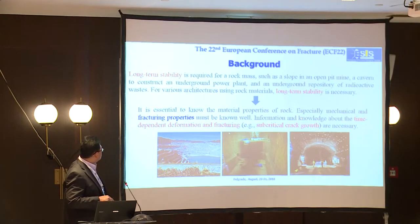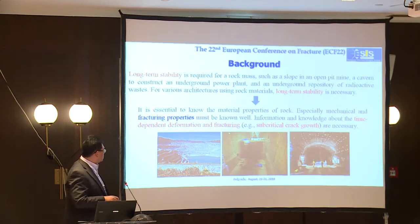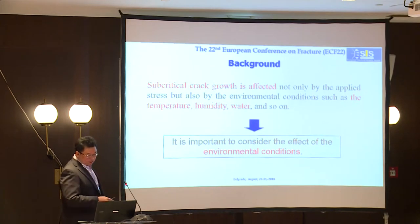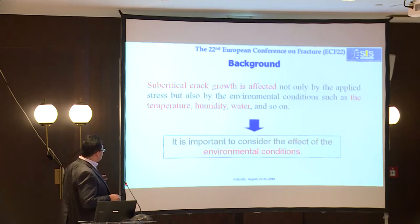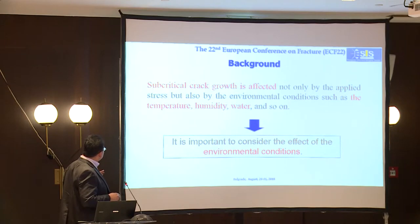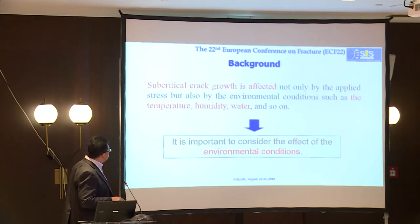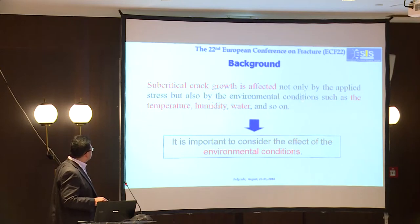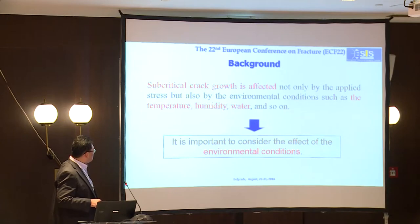Information and knowledge of the permanent deformation — for example, sub-critical crack growth — is necessary. Sub-critical crack growth is a kind of slow crack growth that occurs under stress intensity factors lower than the fracture toughness. This crack growth is affected not only by stress but also by environmental conditions such as temperature, humidity, or presence of water. So it is very important to consider the effect of environmental conditions on fracture growth.